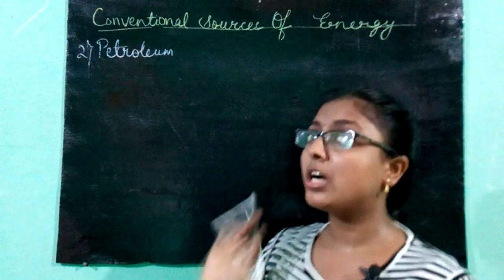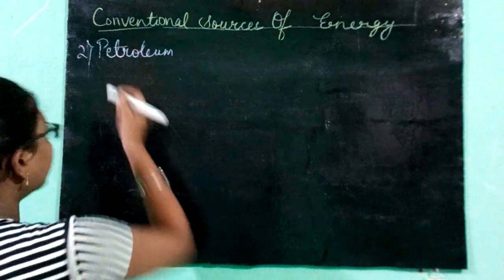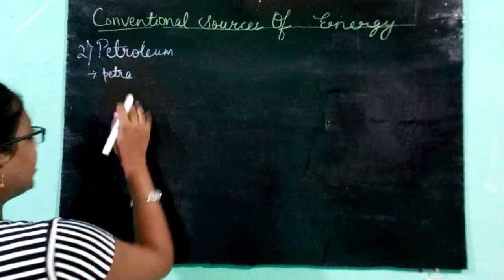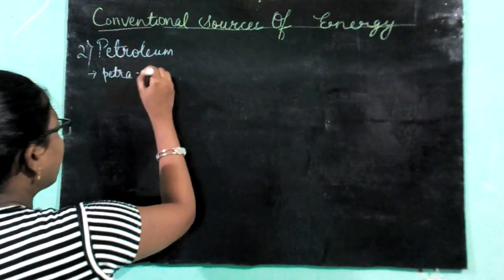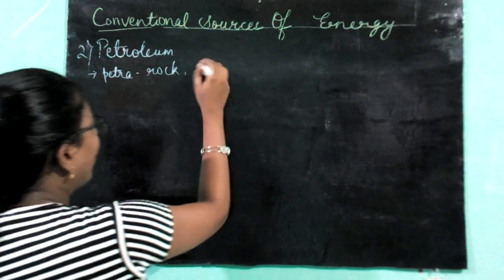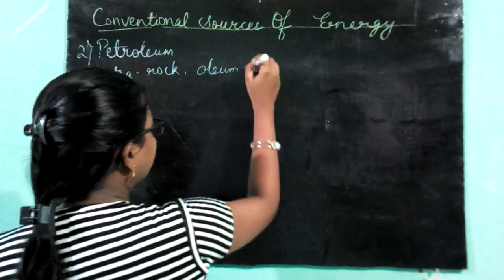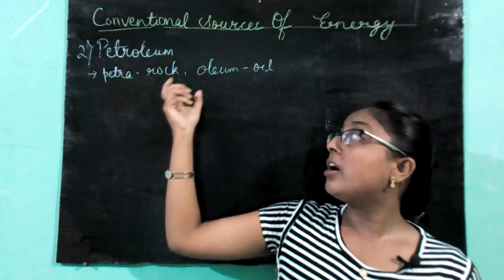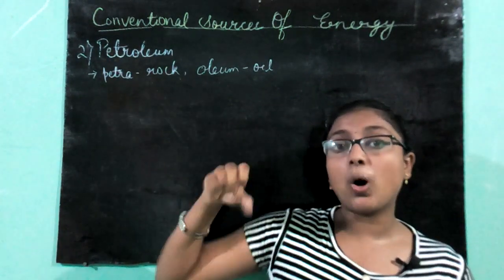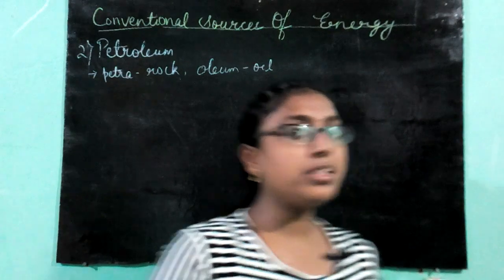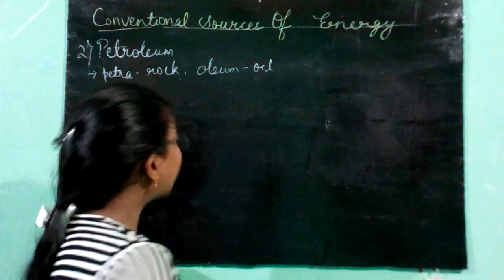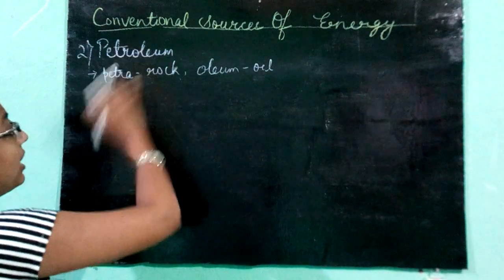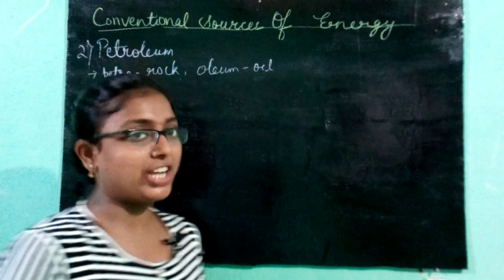Petroleum comes from two words: 'petra,' which means rock, and 'oleum,' which means oil. Therefore, petroleum is also known as rock oil — the oil which is obtained from the rocks below the earth's crust.